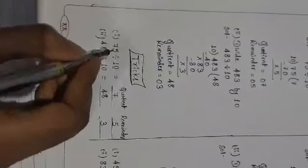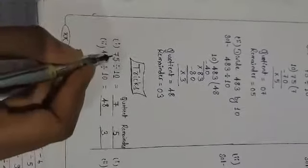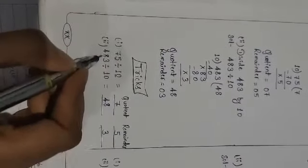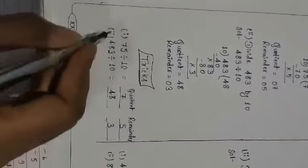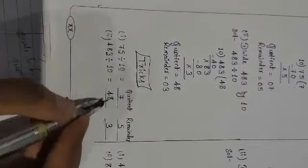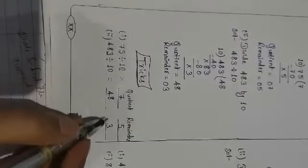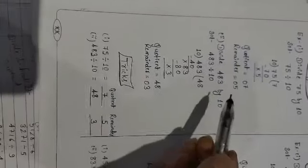So the last digit, the last digit of any digit, is your remainder and the rest of the digits will be the quotient. In this question you can see what is the last digit? 3. And the rest of the digit will be the quotient, that is 48. Directly within a second you can write the answer if the question asks for dividing by 10.